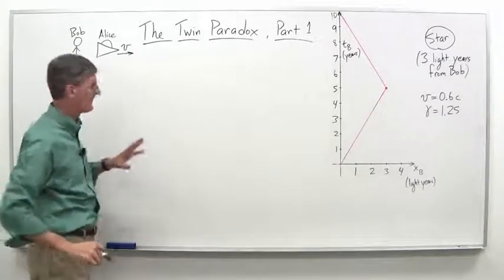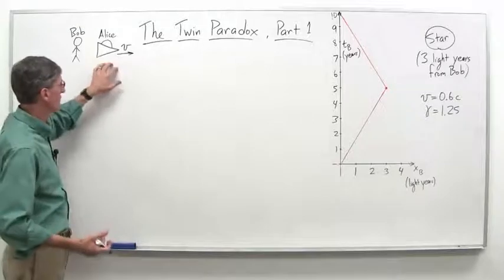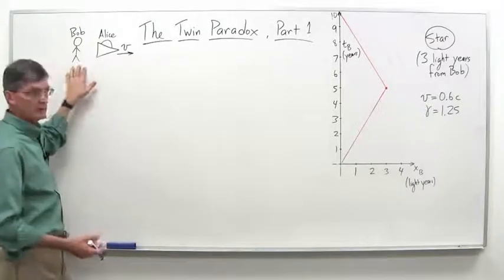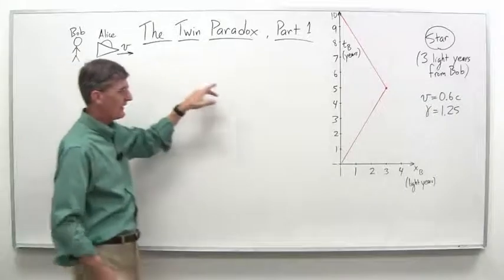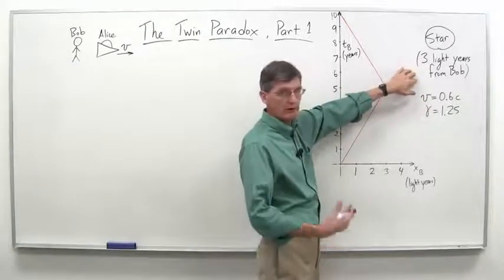You can see we've got a space-time diagram. We'll get to that in a minute. But over here, we'll have Alice traveling this time, so she's in a spaceship going with velocity V. Bob is observing, and Alice heads over to this star which is three light-years from Bob in Bob's frame of reference.